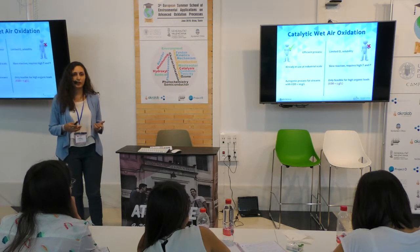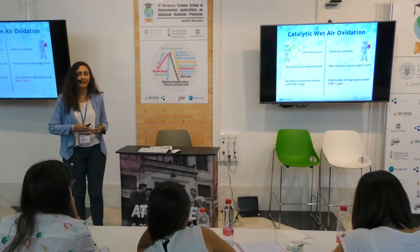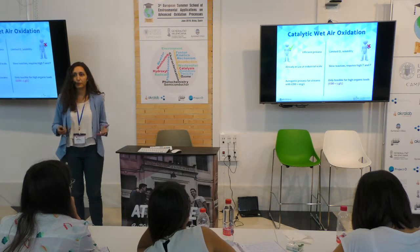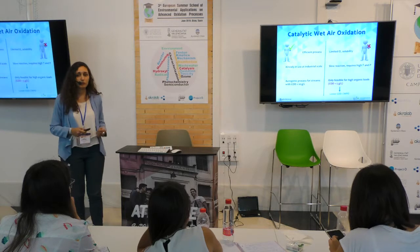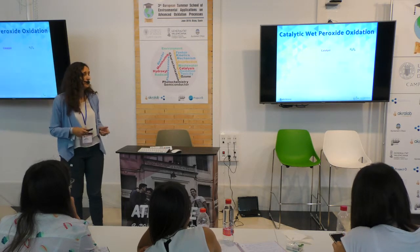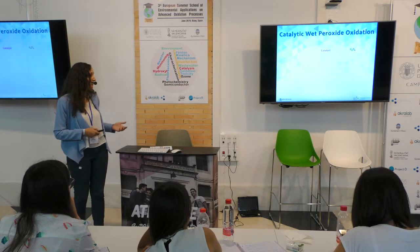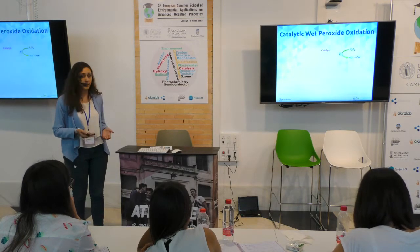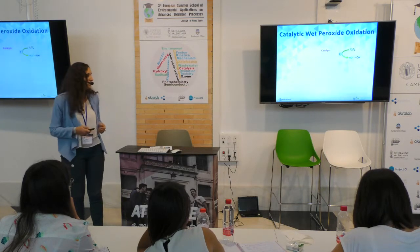So what happens when we have lower concentrations? We are all working here on contaminants of emerging concern — we are working at nanograms or micrograms per liter — we cannot apply catalytic wet oxidation. So we can go to the CWPO process, where we activate hydrogen peroxide with a catalyst to generate hydroxyl radicals. We've talked about this in previous lessons, so I'm going to go a little bit quicker.